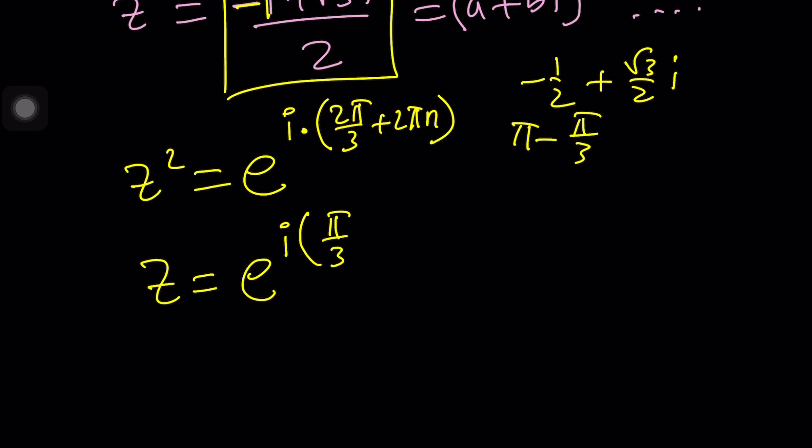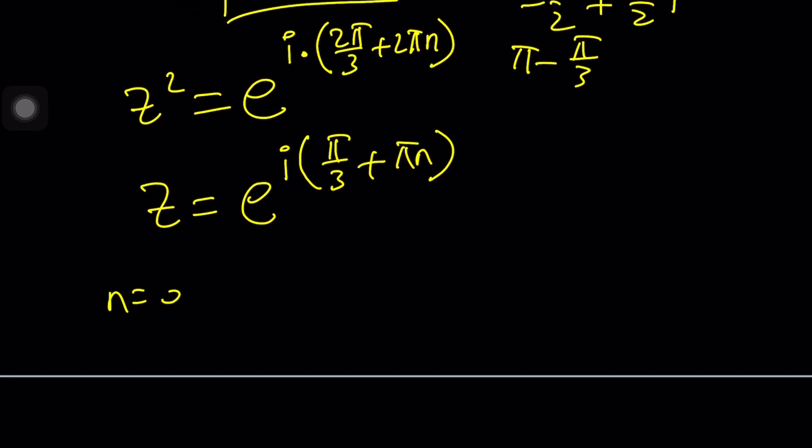If n is equal to zero, you're going to get z equals e to the power i pi over three, which is the 60. By the way, this is going to be one half plus root three over two i. And then if n is equal to one, you're going to get pi over three plus pi, which is four pi over three.